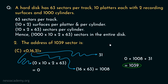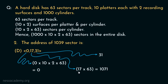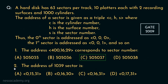For completeness, let's also verify option D (0,17,31): cylinder 0 gives 0 sectors. To reach surface 17, we cross surfaces 0 to 16 — that is 17 surfaces — each with 63 sectors, giving 1,071 sectors. To reach sector 31, we cross 31 sectors. Total: 0 plus 1,071 plus 31 equals 1,102. So option D corresponds to sector 1,102. Therefore, for question 2, option C — address 0,16,31 — is the correct choice.